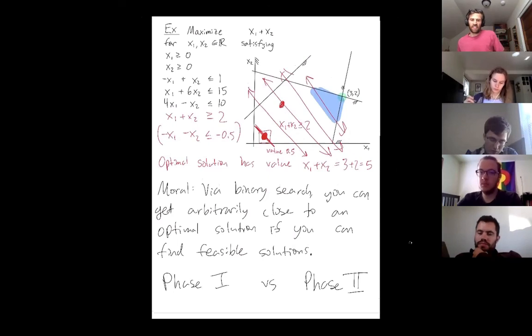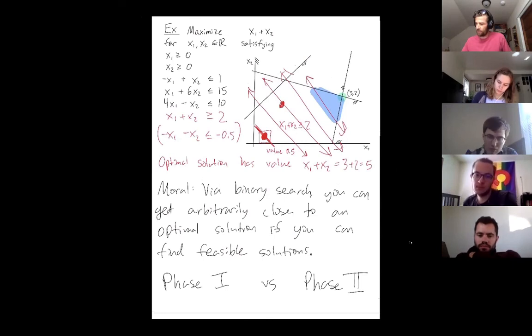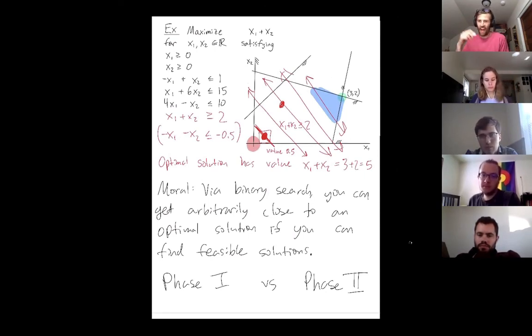In the simplex algorithm, what you do is you find any basic feasible solution, any vertex, and then you try to find better and better vertices until you find an optimal vertex.